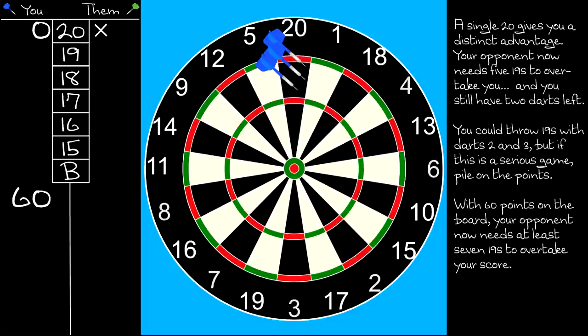By getting ahead on points, you are reducing your opponent's options and driving their behavior. They now need at least seven 19s to overtake you. That requires three darts, so they are forced to leave 20 open for your next turn. Alternatively, if they decide to try and close your 20 first, there's no way they can overtake you this round.